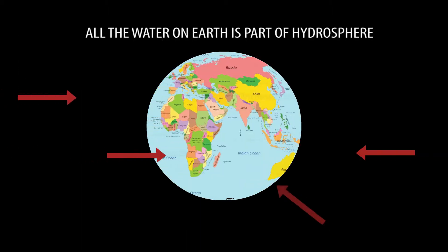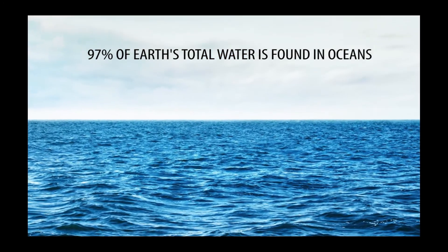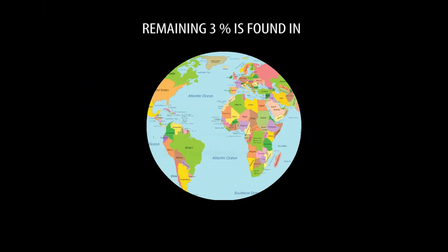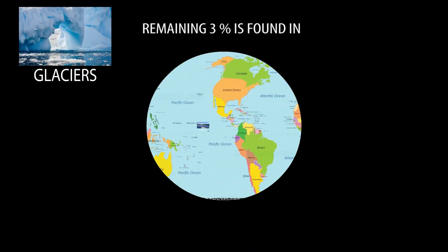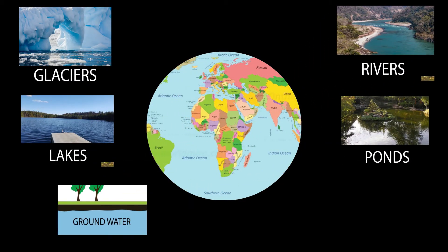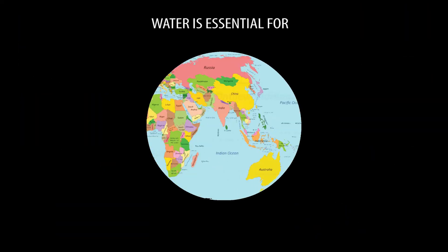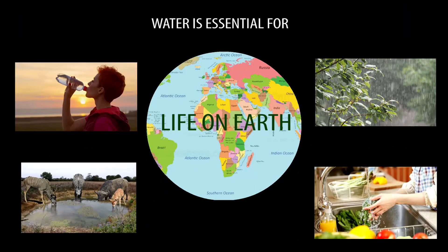All the water on Earth is part of hydrosphere. 71% of Earth's surface is covered in water. 97% of Earth's total water is found in oceans and rest 3% is found in glaciers, lakes, rivers, ponds, underground water, water vapor, etc. Water is essential for life on Earth.